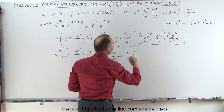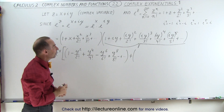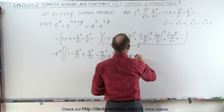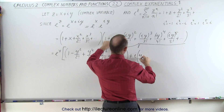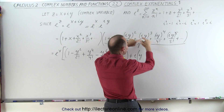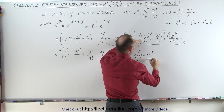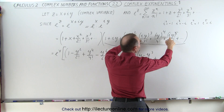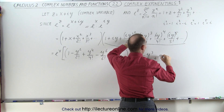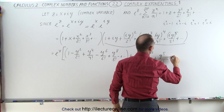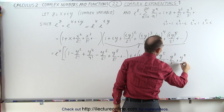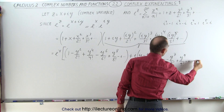Then we add the imaginary half of the elements. We have iy, and factoring out an i, we multiply times y. Since we factored out an i, we have i squared left, which is negative 1, giving minus y cubed over 3 factorial. Then factoring out i leaves i to the 4th, which is 1, giving plus y to the 5th over 5 factorial, minus y to the 7th over 7 factorial, plus y to the 9th over 9 factorial, and at this point you begin to see the pattern.